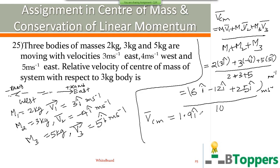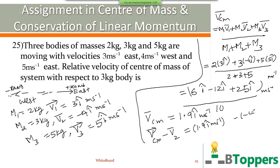You get 1.9î m/s as the velocity of the center of mass. You are asked to find the relative velocity of the center of mass with respect to the 3 kg body, that means relative velocity of center of mass with respect to M2. So the relative velocity of center of mass with respect to M2 equals Vcm minus V2, that is 1.9î m/s minus (-4î) m/s. You get 5.9î m/s. So the answer is 5.9 m/s towards east.